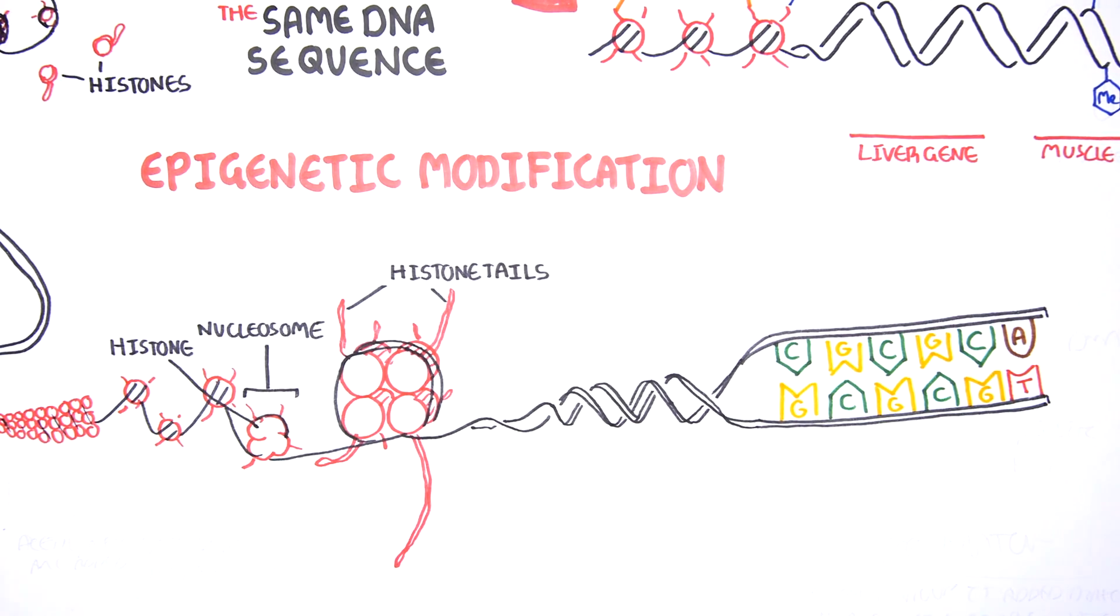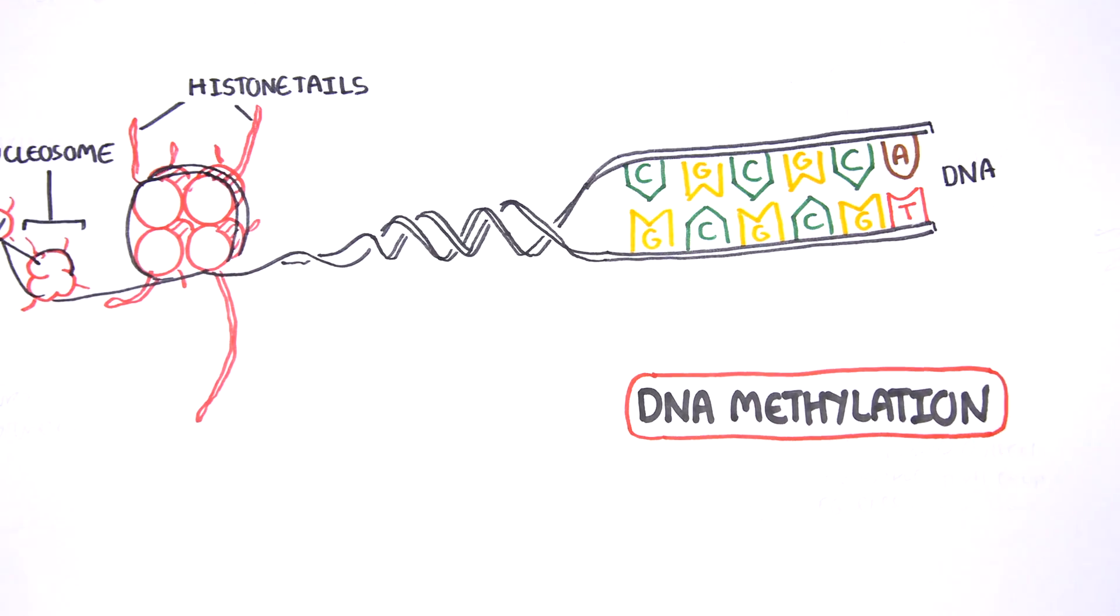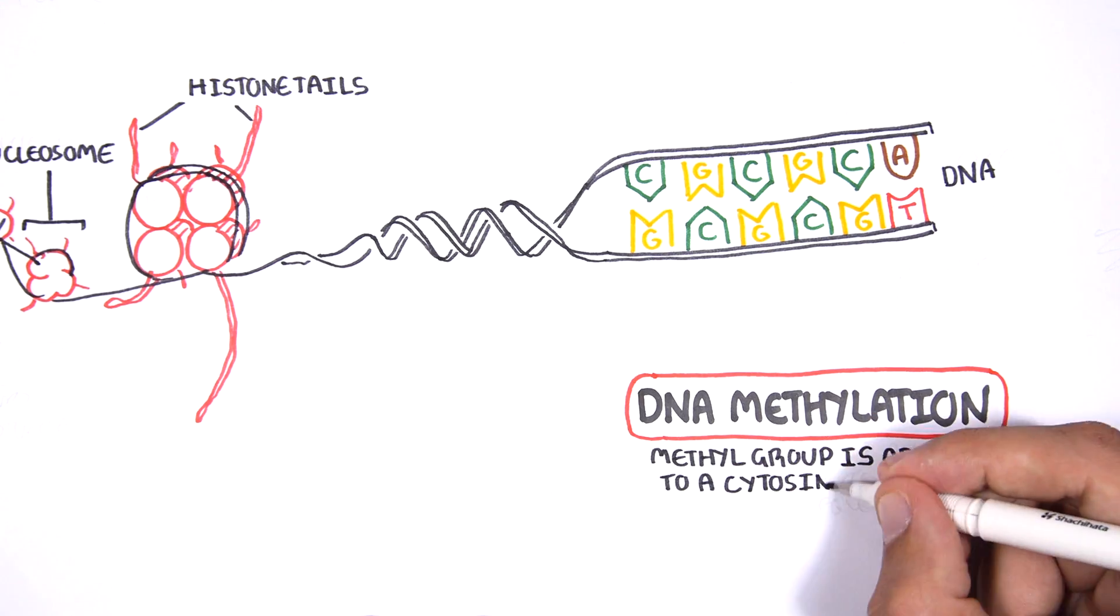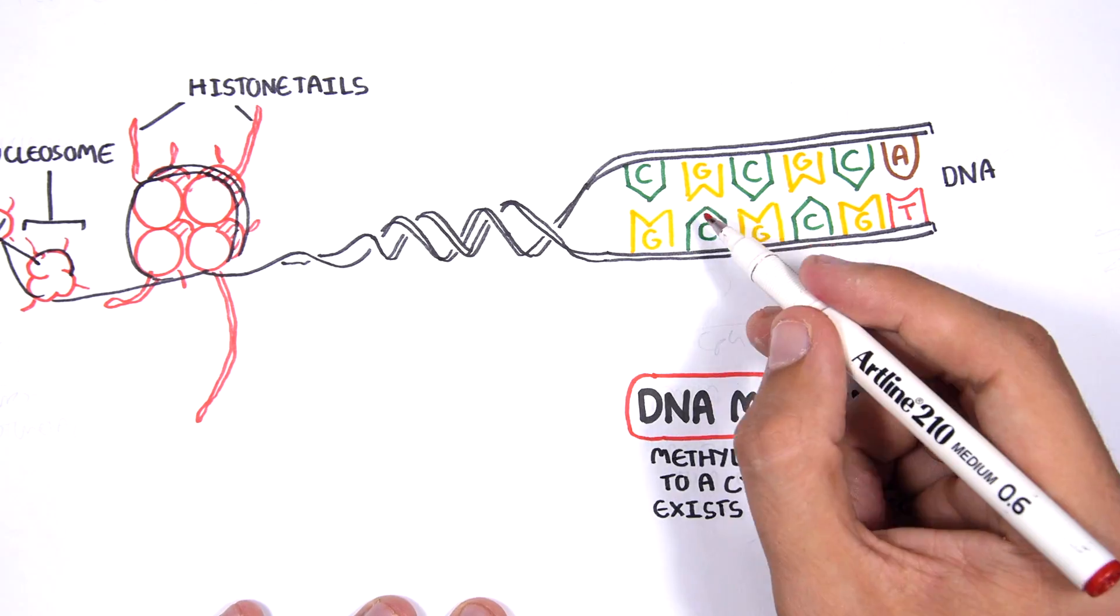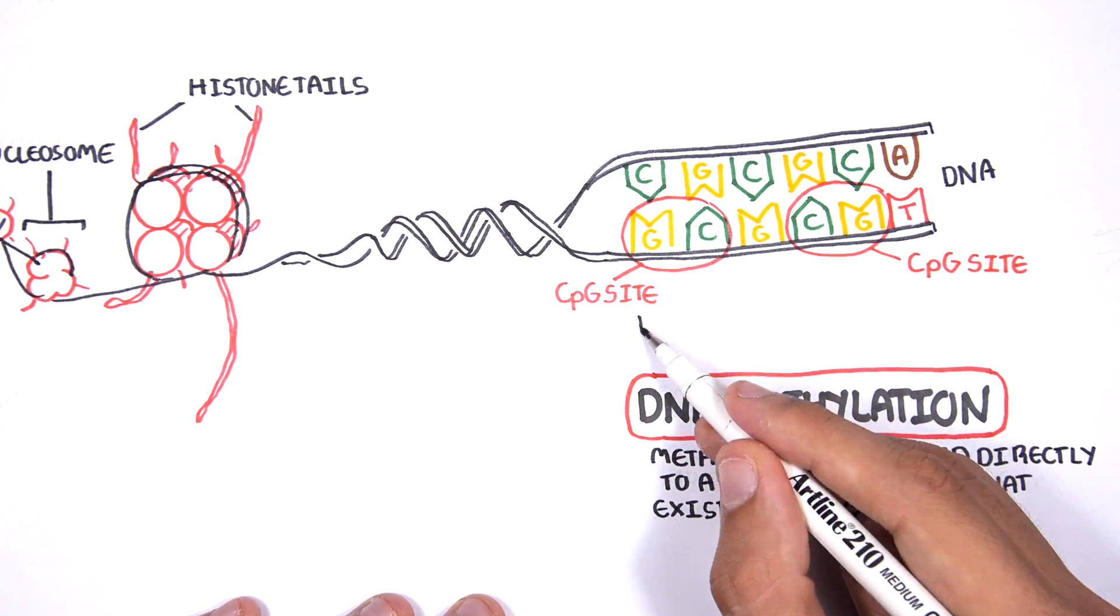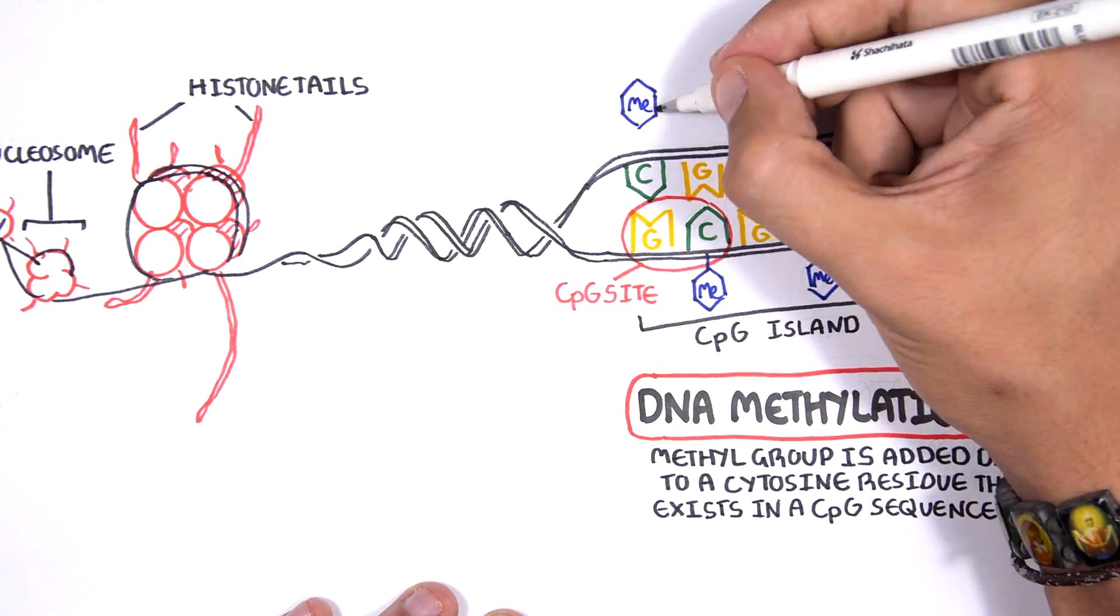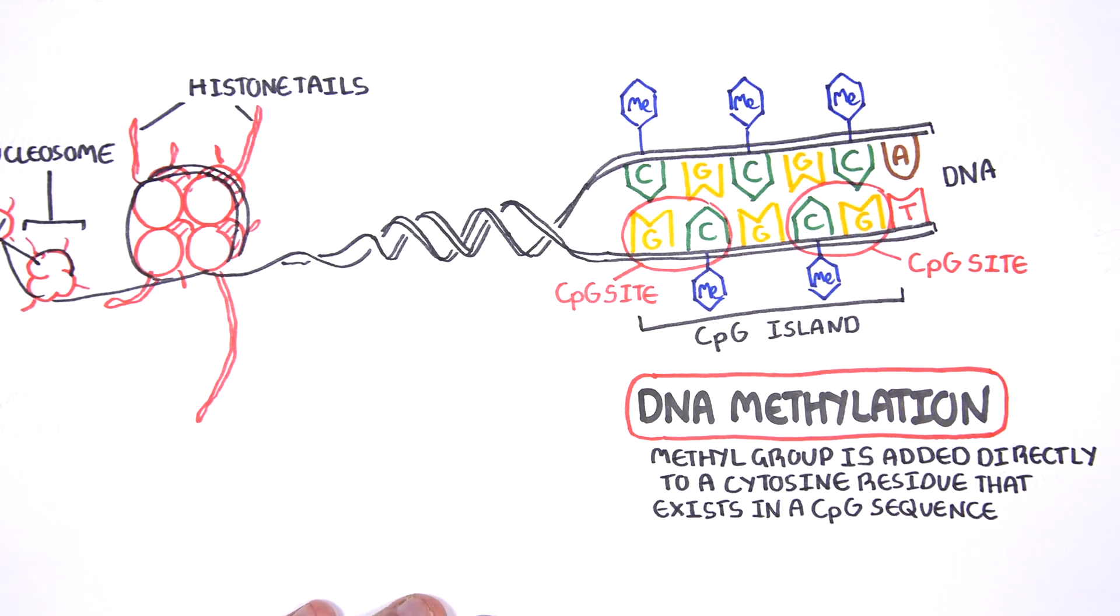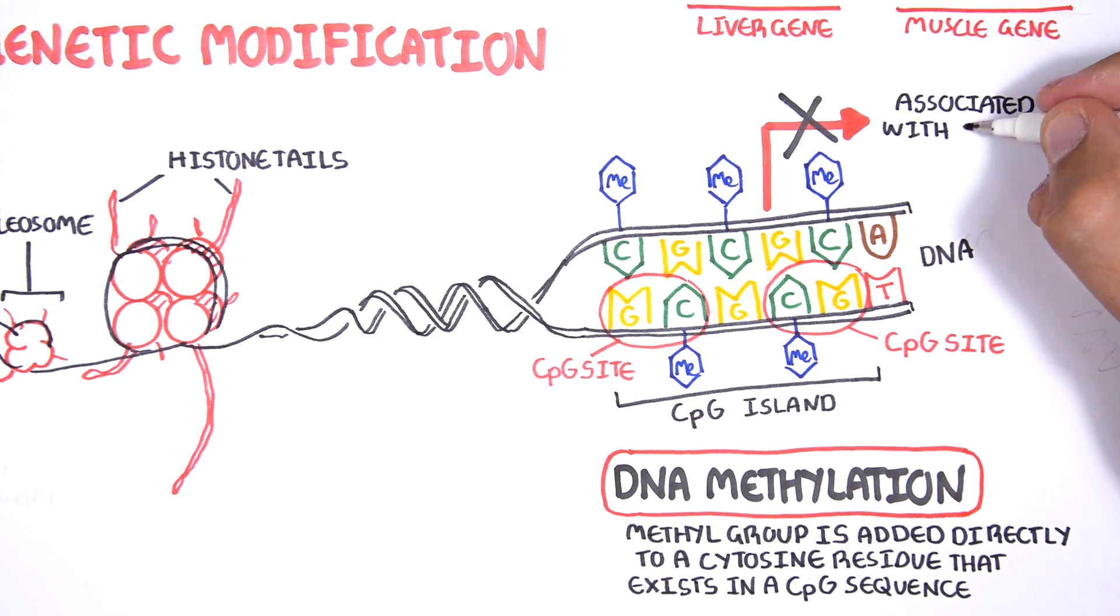There are 2 main epigenetic modifications. The first one we will talk about is DNA methylation, where a methyl group is added directly to a cytosine residue that exists in a cytosine-guanine sequence, or CPG sequence for short. For example, here we have many CPG sites that make up a CPG island, and here the cytosines are methylated. The methylation of CPG sites in promoter regions is associated with gene silencing.